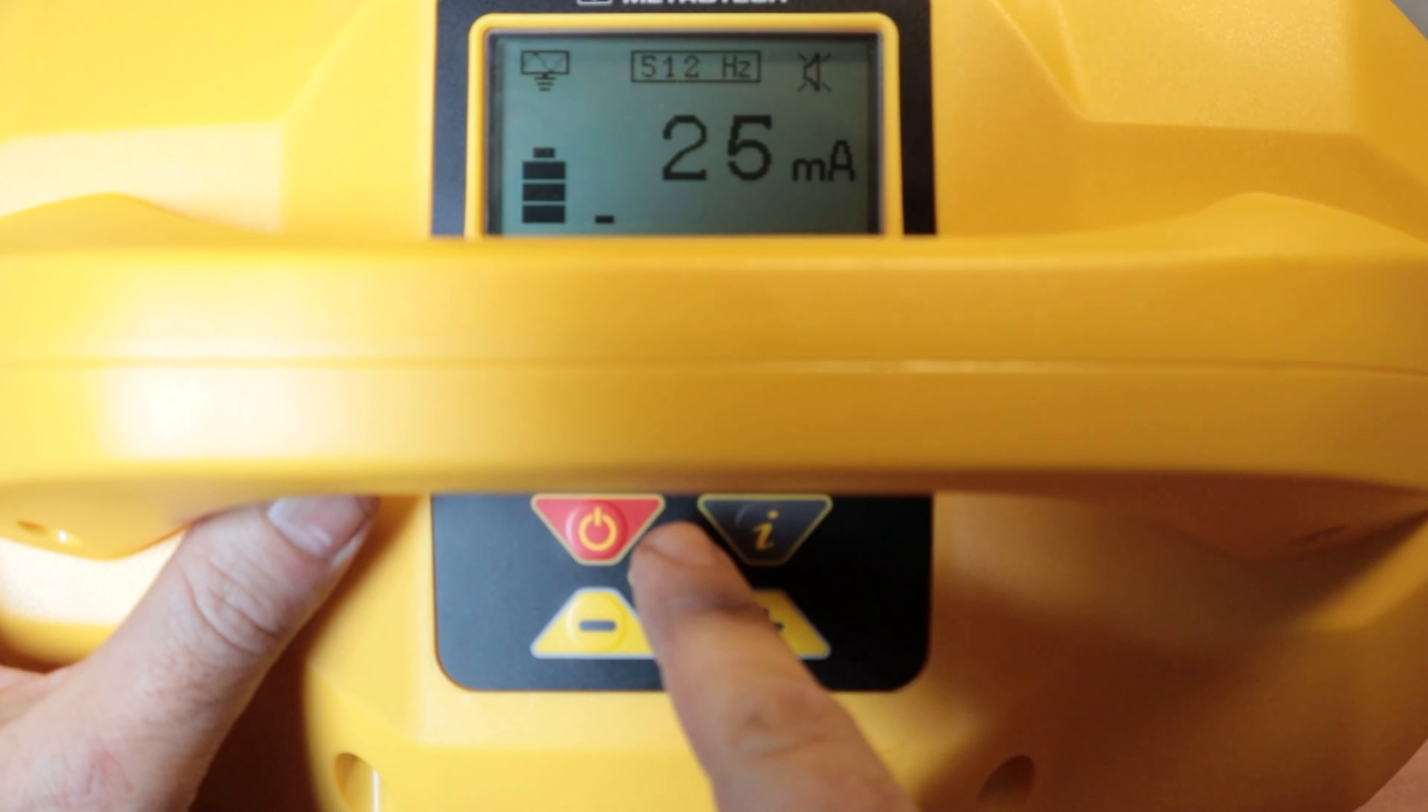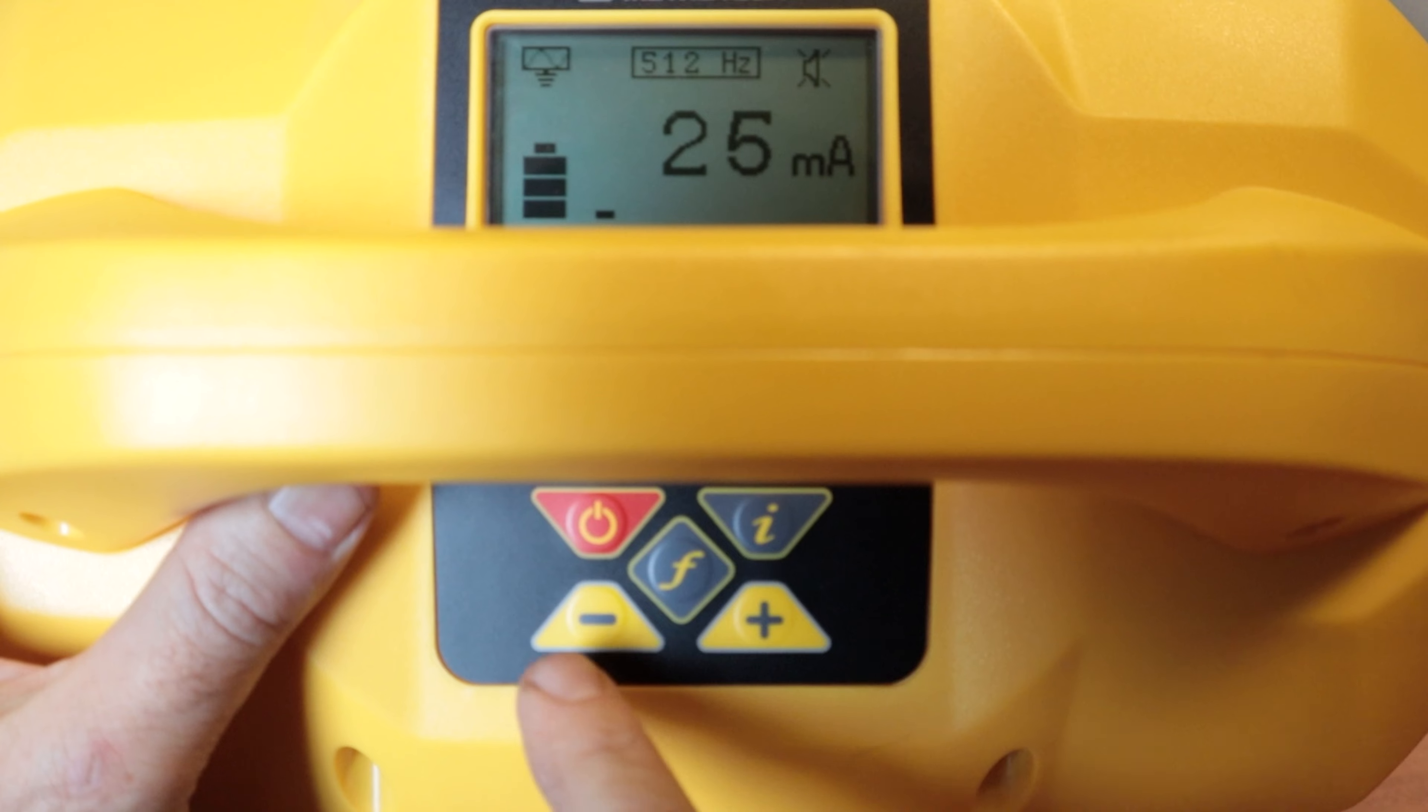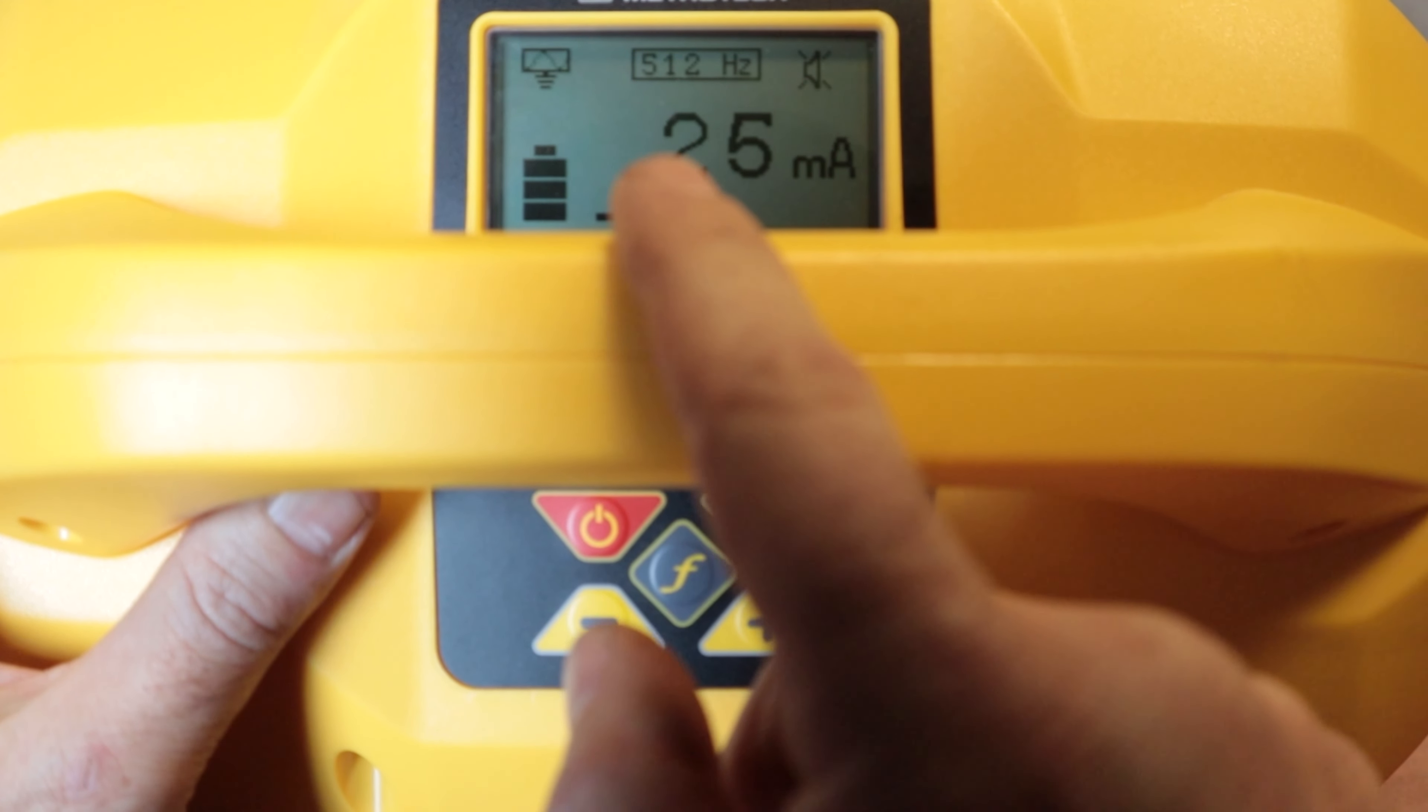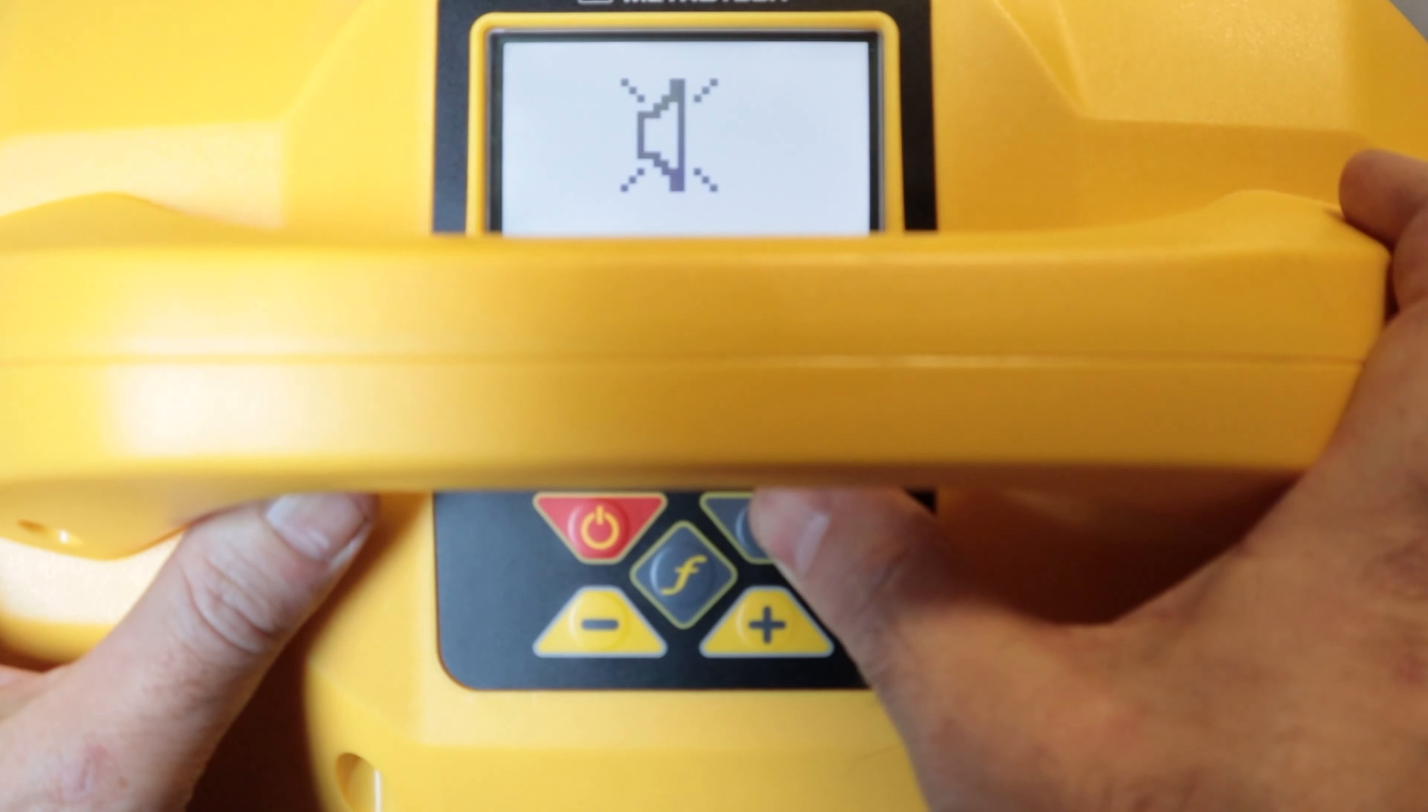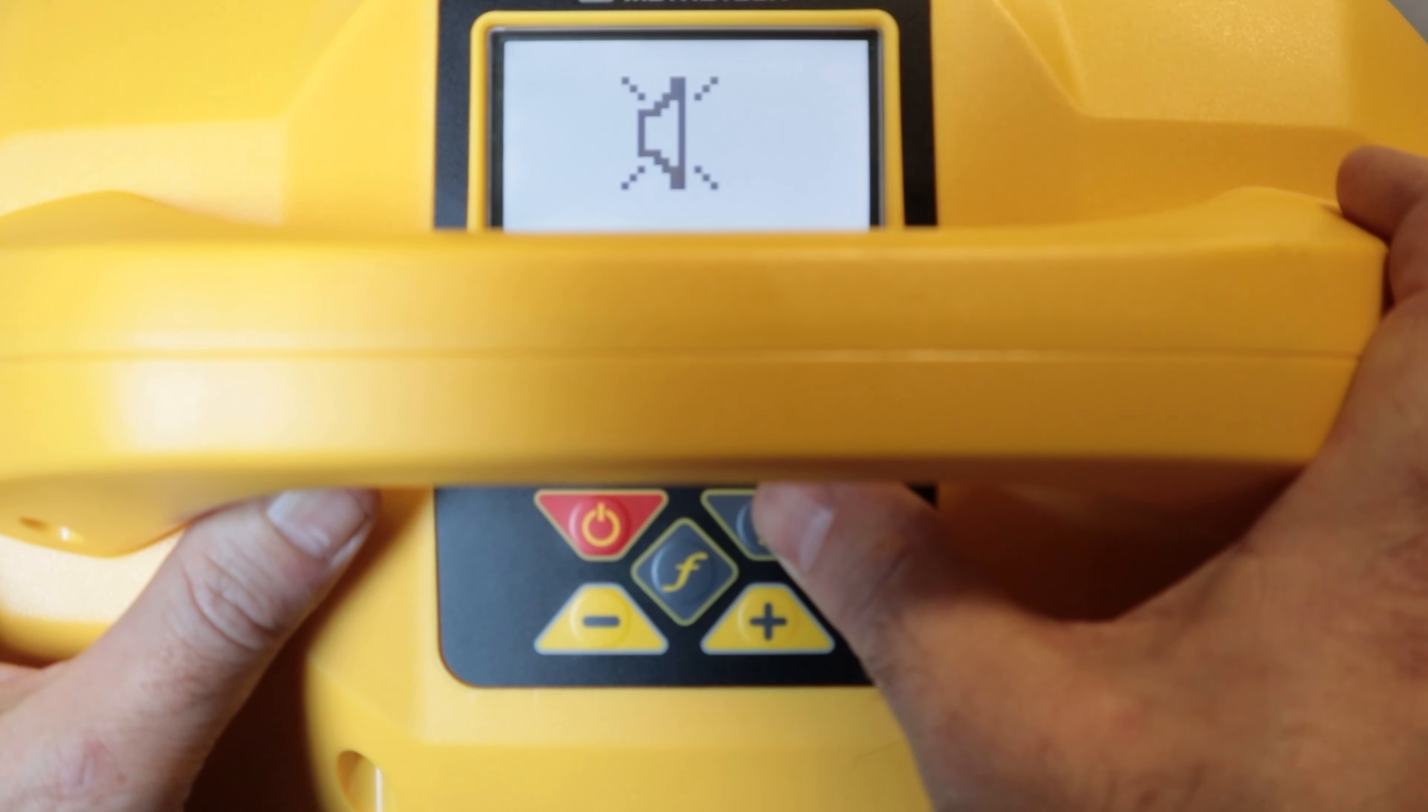Obviously down here I have my F button to change my frequency. My output I can change by my plus and minus buttons. This is how much current I am actually putting out on the line and you'll see that with my direct connection leads by the milliamps changing. I can push the I button and it will give me more information or settings that I can change.